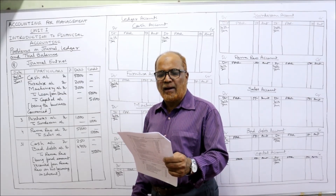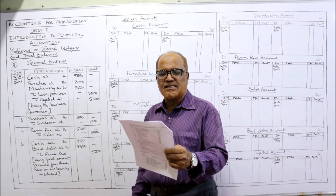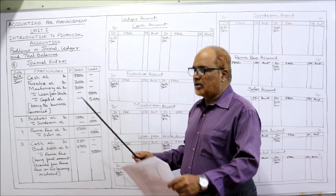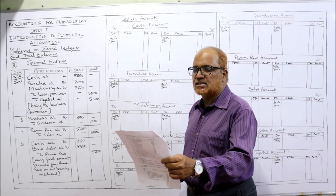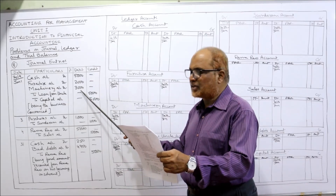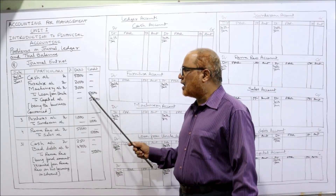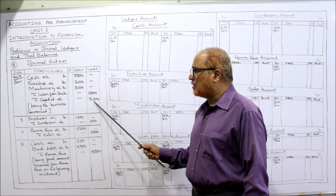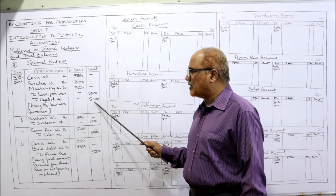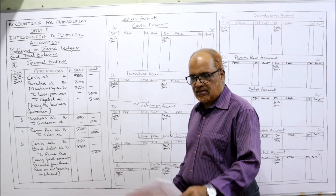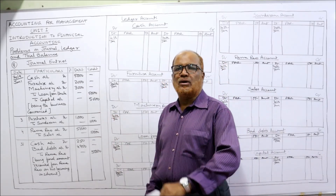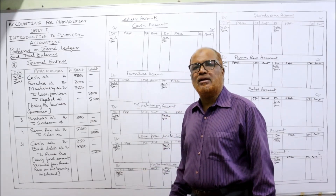So for January 1st: cash account debit 5000, furniture account debit 2000, machinery account debit 3000, loan from uncle credit 5000, and capital account credit 5000 — capital being the balancing figure, business commenced. Second transaction: goods purchased from Sundaram and Company for 1000 on credit.